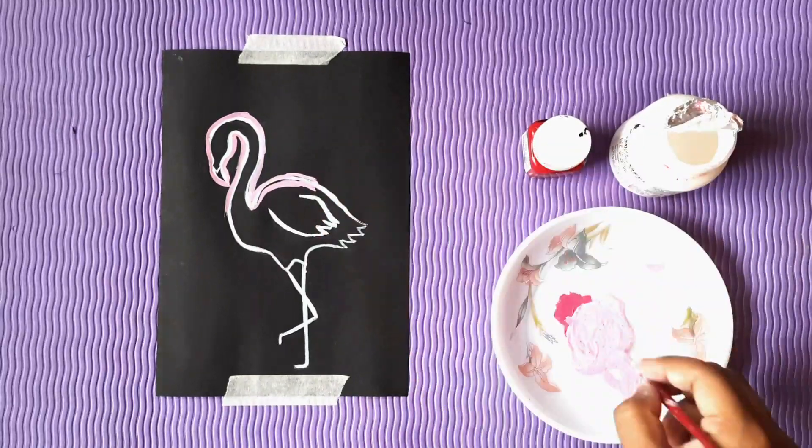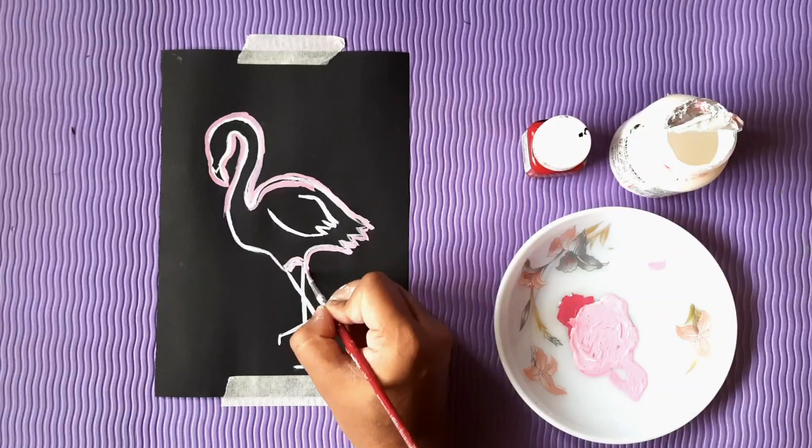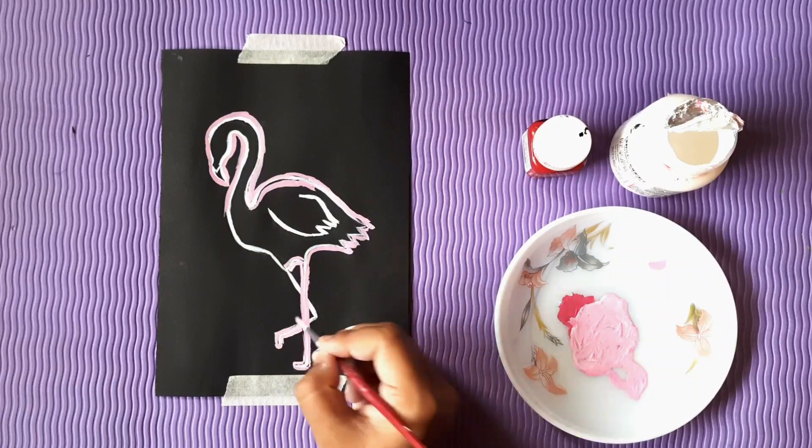While doing this, do not worry if you mess up and cover the white line. Just go with the flow because at the end we will do a second coat of white lining to give that flamingo a glowing effect.